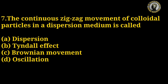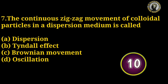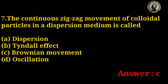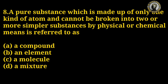Question number 7: The continuous zigzag movement of colloidal particles in a dispersion medium is called what? Options: dispersion, Tyndall effect, Brownian movement, oscillation. The right answer is C — Brownian movement.